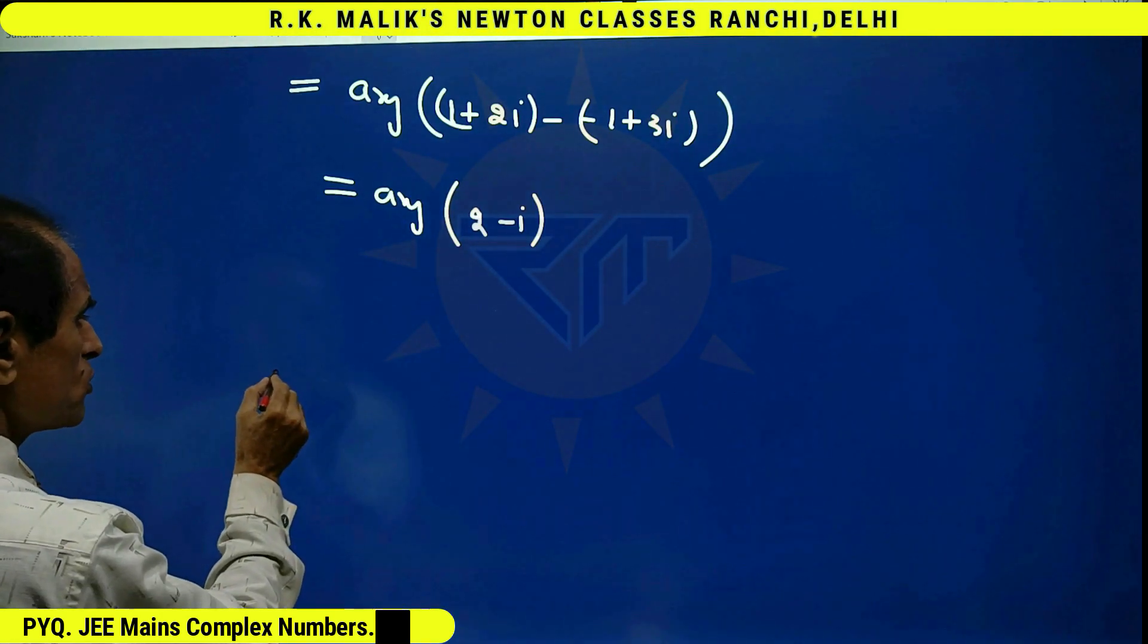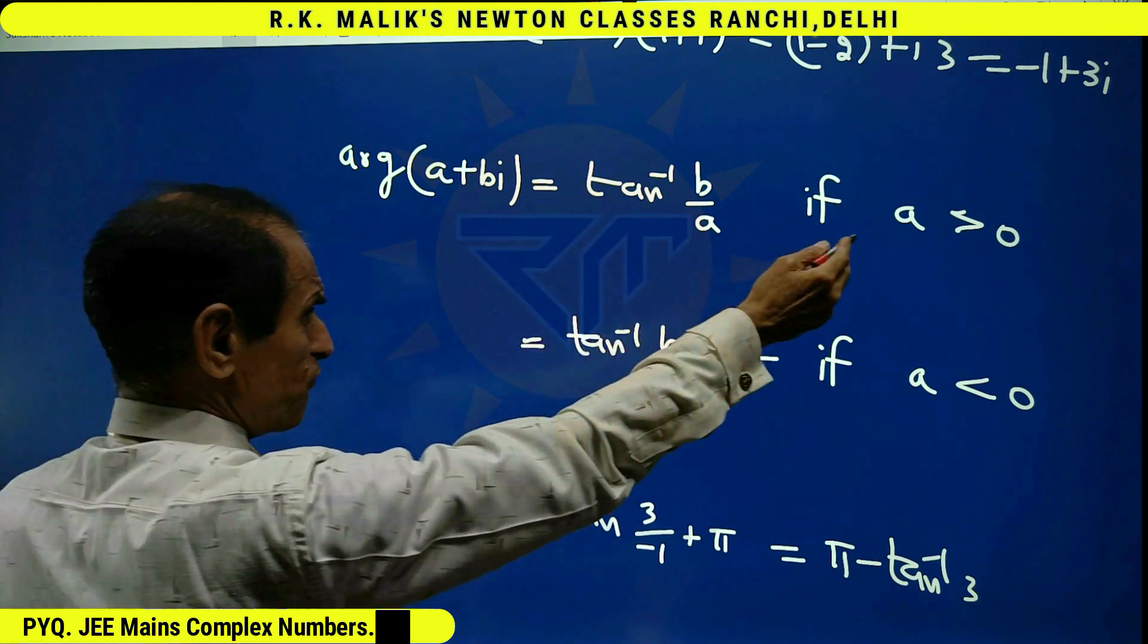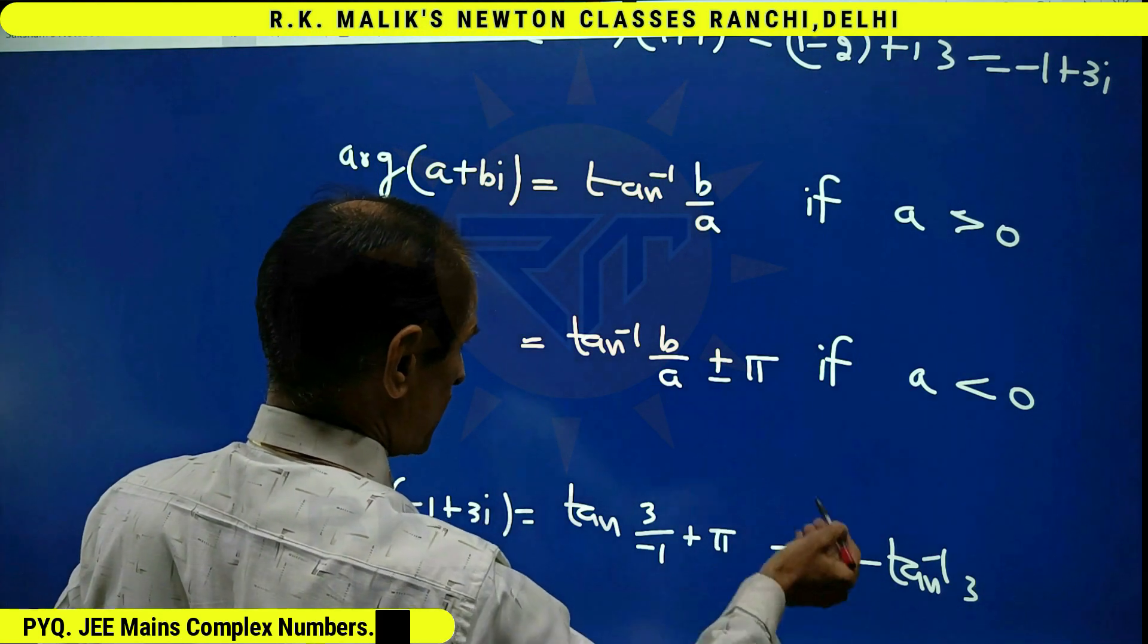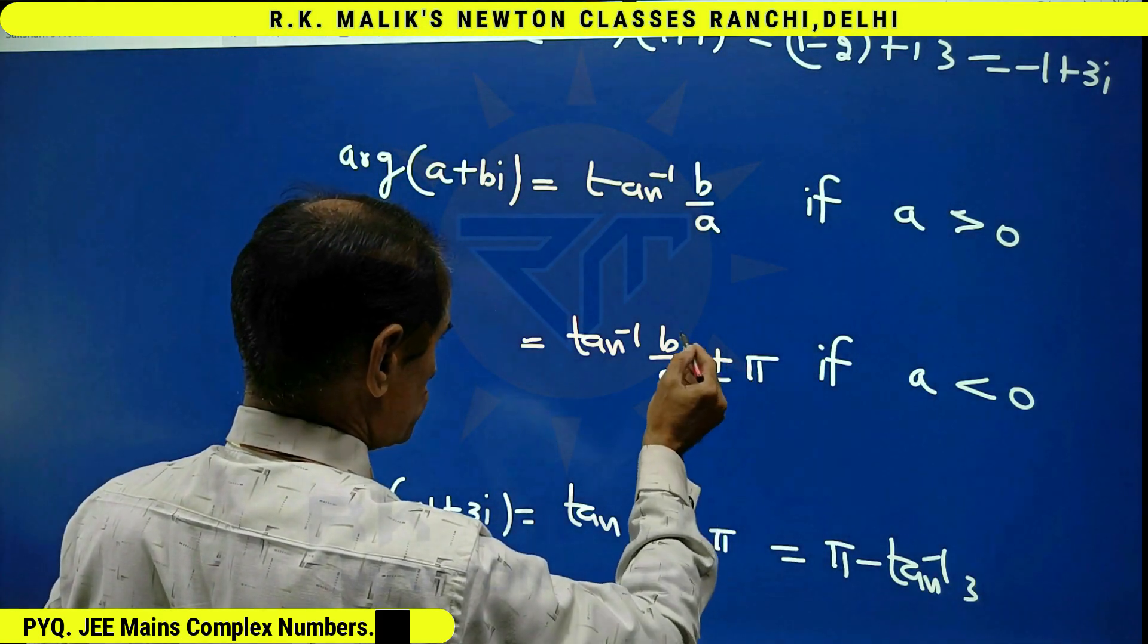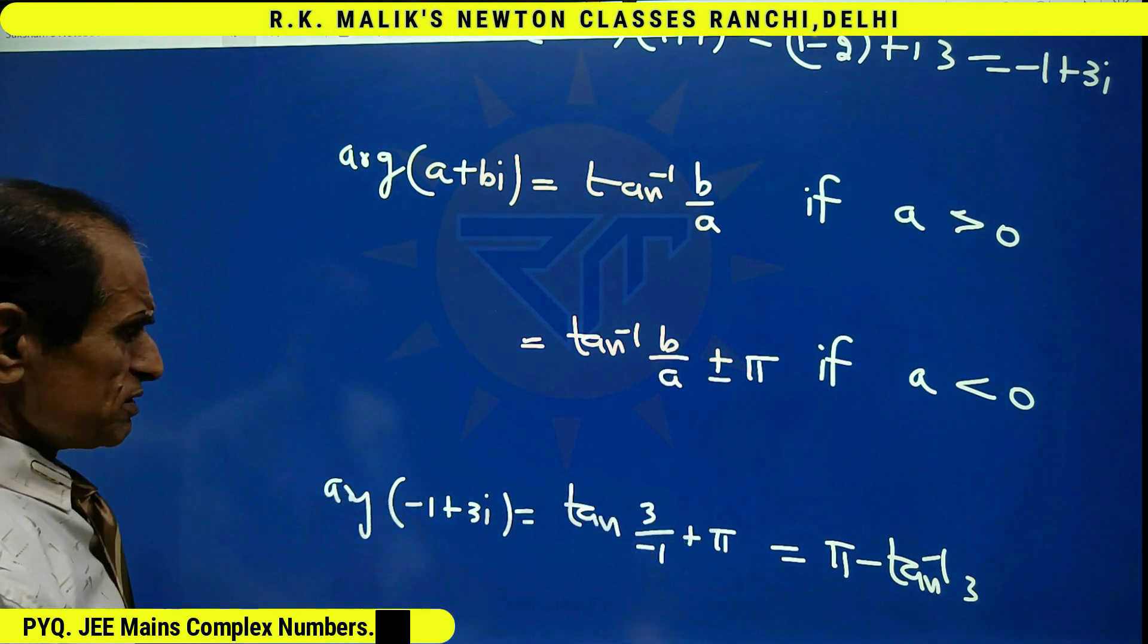And as I told you, argument of a plus bi is tan inverse (b/a) if a is positive, and plus or minus π if a is negative. Plus π is used if b is positive. Minus π is used if b is negative.